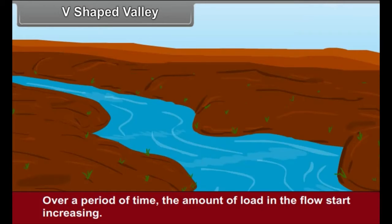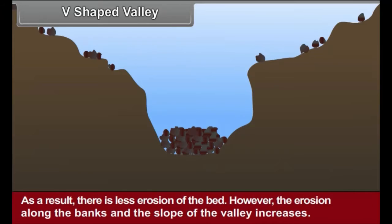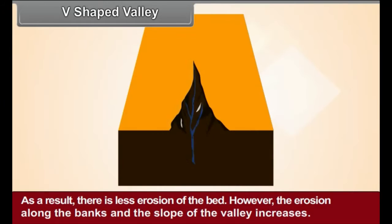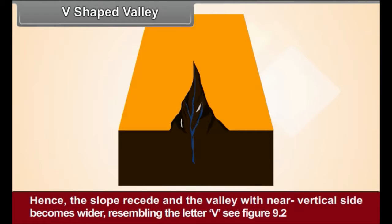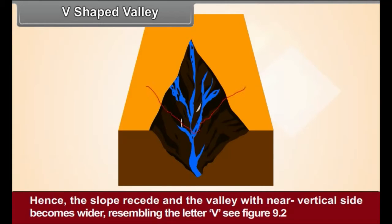V-shaped Valley: Over a period of time, the amount of load in the flow starts increasing. More and more energy of the river gets consumed in transporting the material. As a result, there is less erosion of the bed. However, the erosion along the banks and the slopes of the valley increases. Hence, the slopes recede and the valley with near vertical sides becomes wider, resembling the letter V.